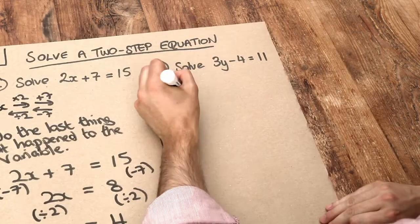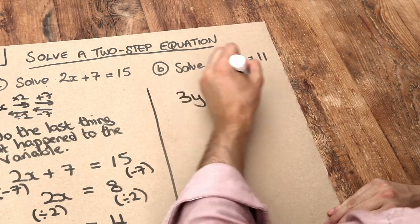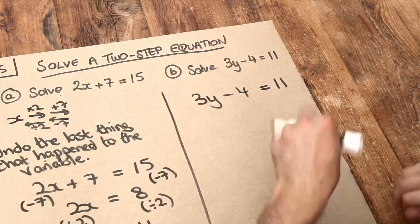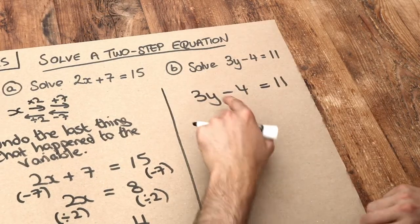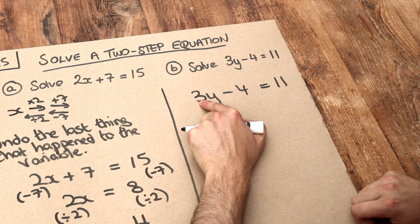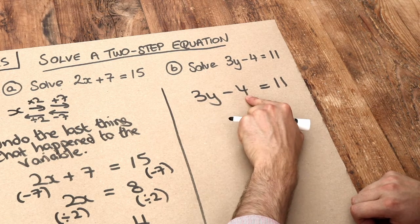Let's do the second one. We've got 3y minus 4 equals 11. Let's undo stuff in reverse order. y was multiplied by 3, then you subtracted 4.